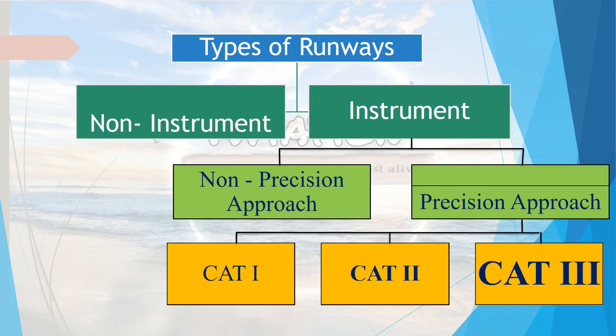To summarize, runways are broadly classified into two categories: the non-instrument runway and the instrument runway. The instrument runway is further categorized into the non-precision approach runway and the precision approach runway. The precision approach runway is further categorized into three categories: CAT-1, CAT-2, and CAT-3, based on the sophistication of equipment and visual aids used to help an aircraft land safely on the runway.